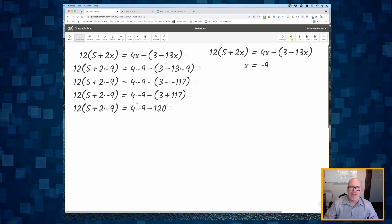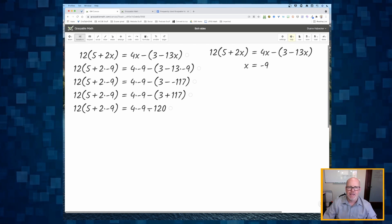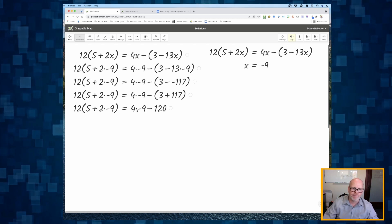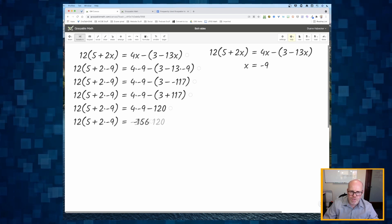And now I got 4 times negative 9 minus 120. If I click on that minus sign, it's going to say no, you're not allowed to do that. You got to take care of the multiplication first. Then you can do the subtraction.